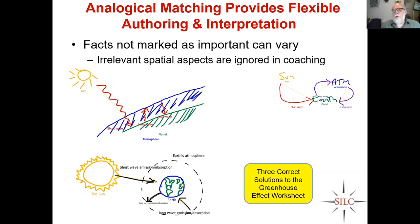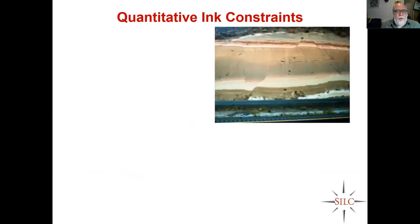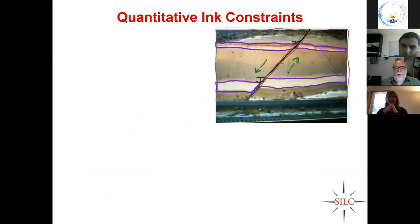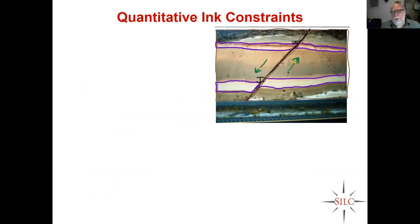All the worksheet cares about is that there are the appropriate entities and what kinds of relationships hold among them. By specifying what facts are important, instructors are putting down what they mean. Now geoscience is very spatial, so sometimes it's really crucial to nail down particular spatial relations. That's why we have the idea of drawing on a background — for instance a photograph — and giving quantitative ink constraints. If the instructor draws a fault, marker beds, and directions of shift in their sketch, they can specify that the student's ink can be a little off, but not too far off.